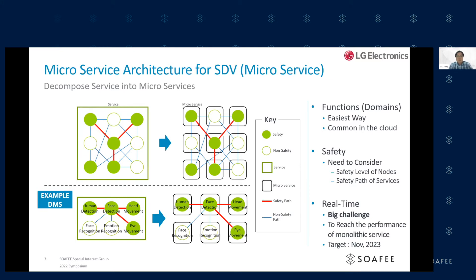This is the microservice architecture explanation. Automotive architectures are evolving into MSA, as I mentioned earlier, specifically for the SDV environment. In legacy monolithic vehicle services, critical and non-critical features are integrated together, so partial software updates are not realistic, and software management is very tricky due to software complexity, even in a mixed critical environment.